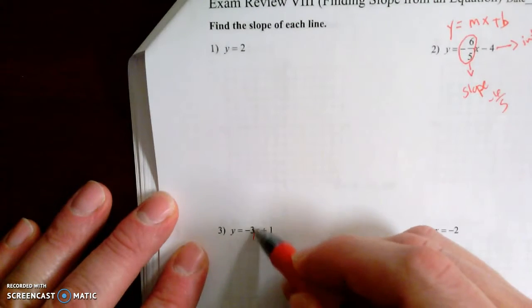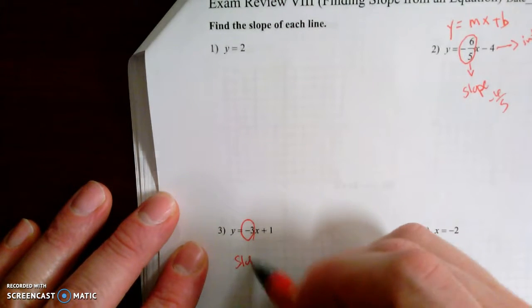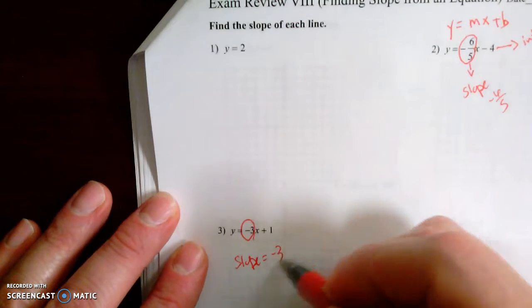For example, down here, the coefficient of x is negative 3. So slope is negative 3.